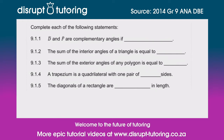They've said to us: complete each of the following statements. Angle D and angle F are complementary angles if... So what do we know about complementary? We know that angles are complementary if they add up to 90 degrees. We would say angle D plus angle F equals 90 degrees.